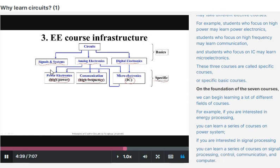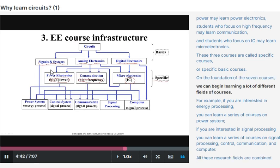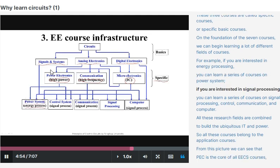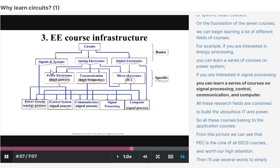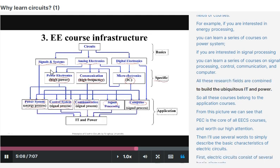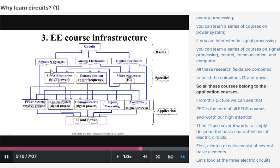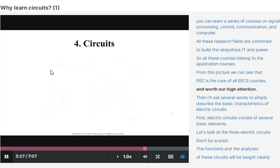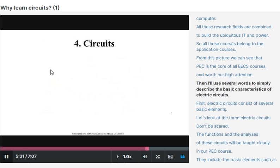These three courses are called specific courses. On the foundation of the seven courses, we can begin learning a lot of different fields of courses. For example, if you are interested in energy processing, you can learn a series of courses on power systems. If you are interested in signal processing, you can learn a series of courses on signal processing, control, communication, and computer. These research fields are combined to build the ubiquitous IT and power. So all these courses belong to application courses. From this picture, we can see that PEC is the core of all EECS courses and warrants high attention.